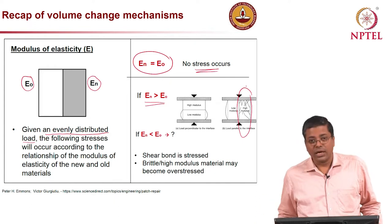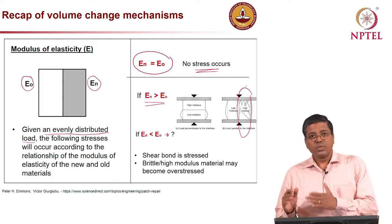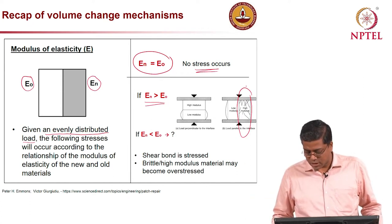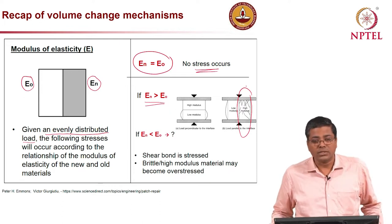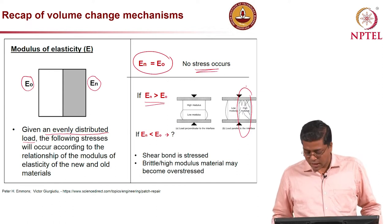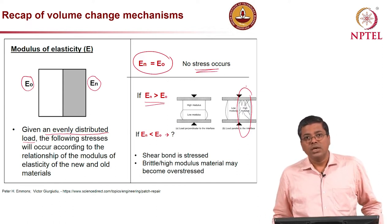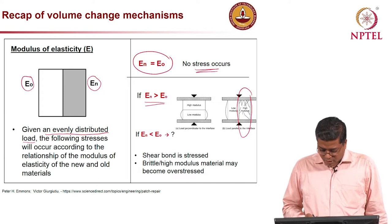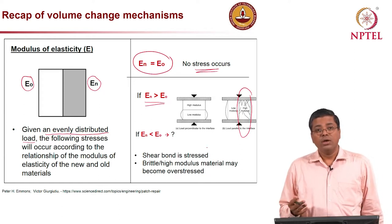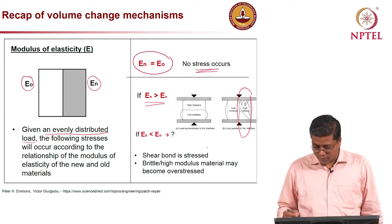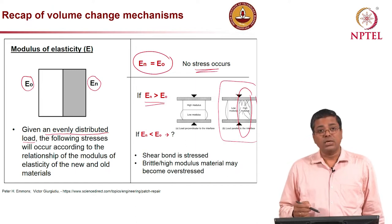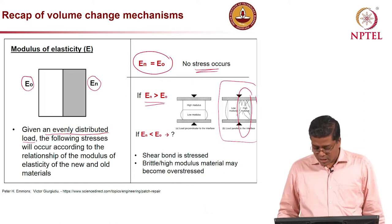When you have a high modulus material, it will enter the plastic stage of the stress-strain behavior and experience higher stress, leading to cracking, while the material with low modulus is still experiencing a lower stress level. Shear bond can also be stressed depending on the direction of the applied load — you can experience shear bond failure between the two materials along that plane.